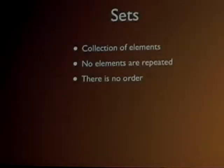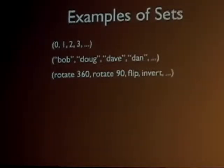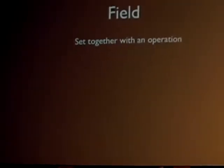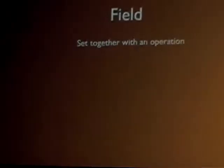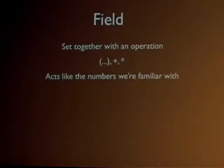Sets. Sets are a collection of elements. No elements are repeated. There is no order. Examples of sets: integers, men's names, transformations on a geometric object. A field is a set together with two operations — addition and multiplication. It acts just like the numbers we're familiar with.